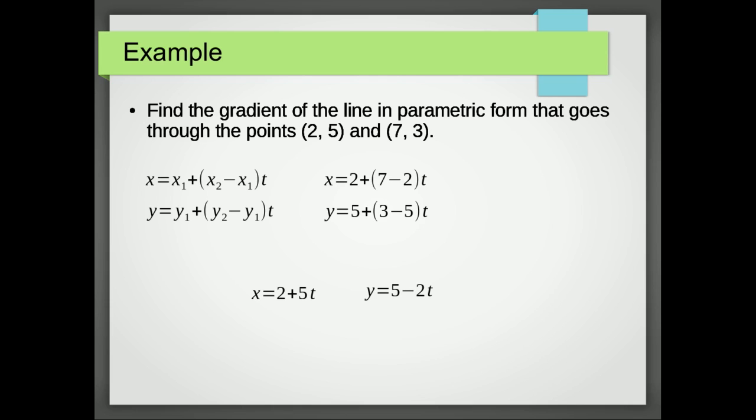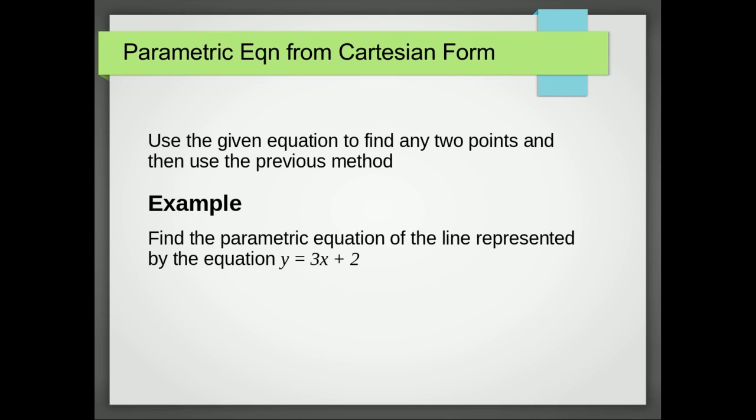Then we get the parametric equation from the Cartesian form. I'm not going to go into too much detail. All I'm going to say is all we need are two points because that's what we did previously. So if you see an example, we've got y equals 3x plus 2. Now remember we need any two points. The thing that's easiest to do is to say x equals 0, y equals 2, so that's our first point. And x equals 1, y equals 5 is our next point. And we just use those with the method that I've just shown you.